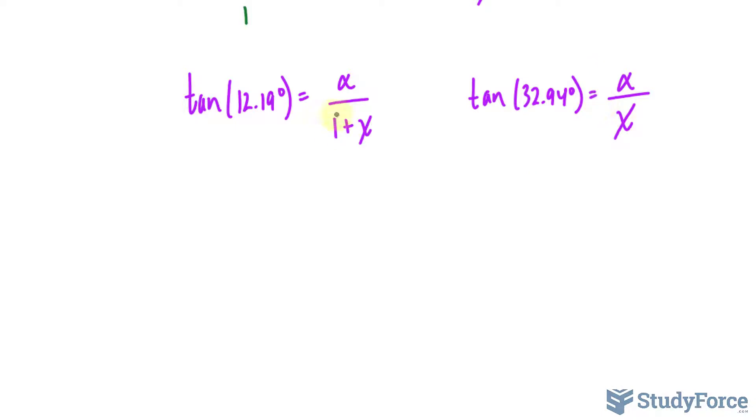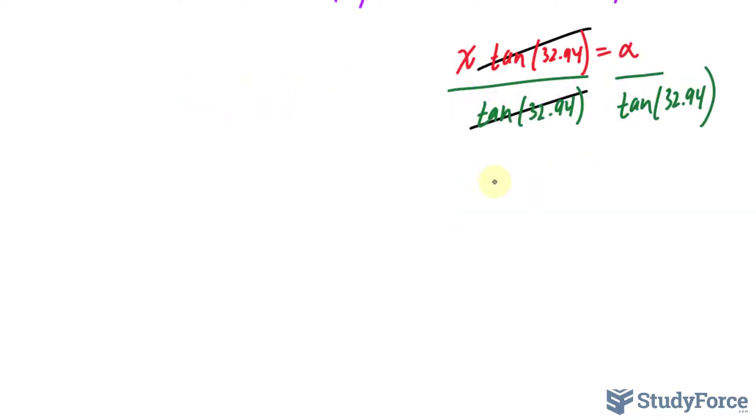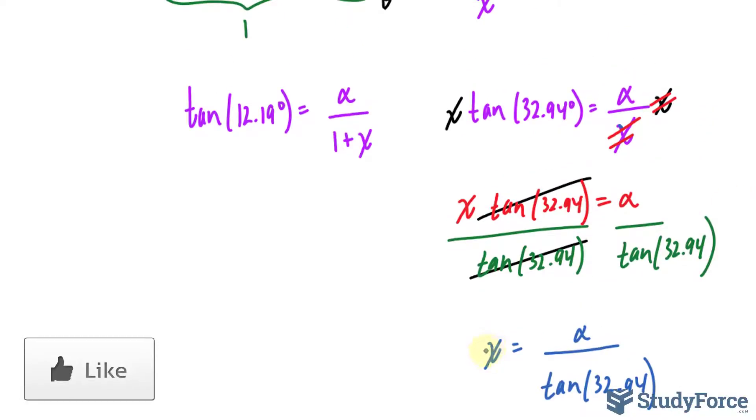I'll start with this equation because we don't have this one plus x at the bottom. It's a little more simple. I'll multiply both sides by x so that I can eventually isolate for x. That will cancel out. Then I have x times tangent of 32.94 is equal to alpha. I divide both sides by tangent of 32.94. I would avoid evaluating tangent at 32.94 until the very end of the question because you don't want to round too early. So that will cancel out with that. And now you have an equation that has alpha on the right side and x on the other, which we will now substitute into here.